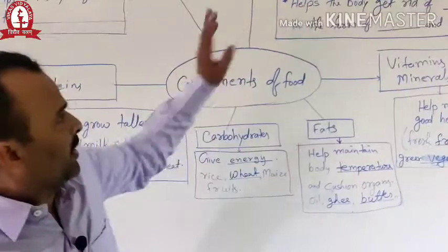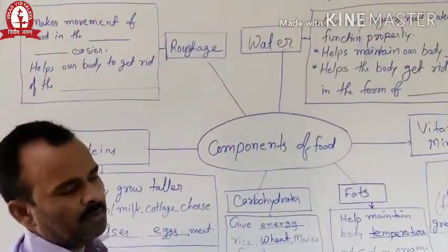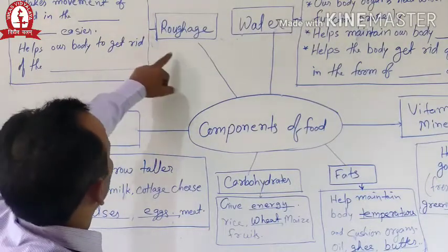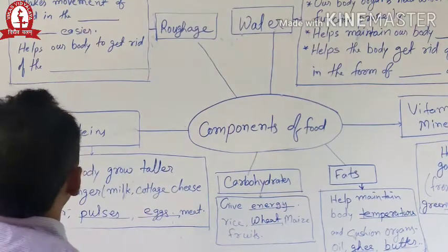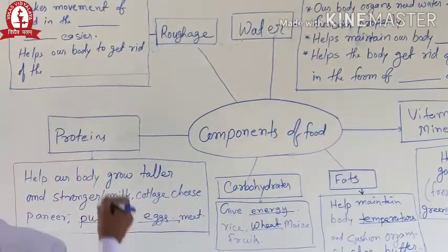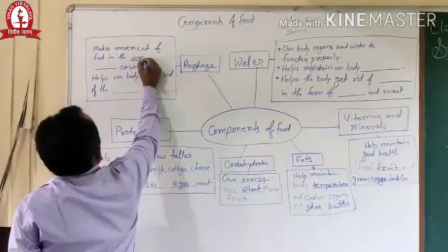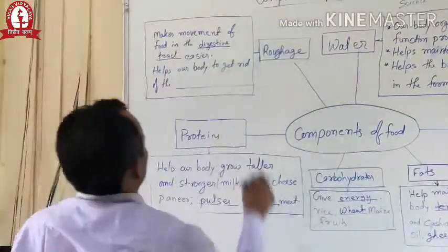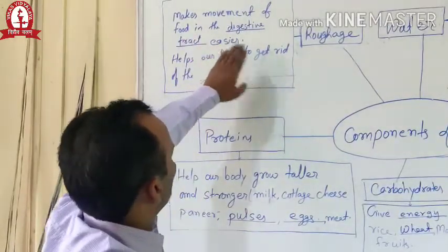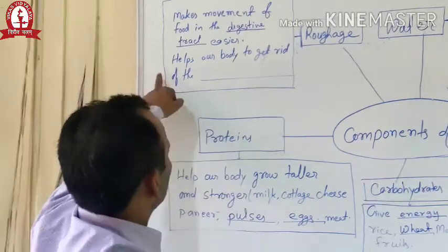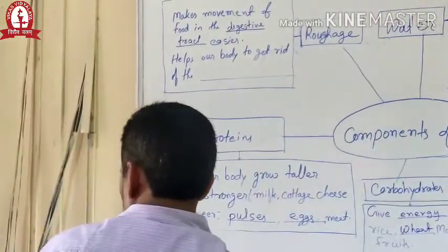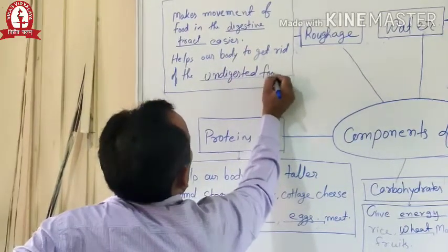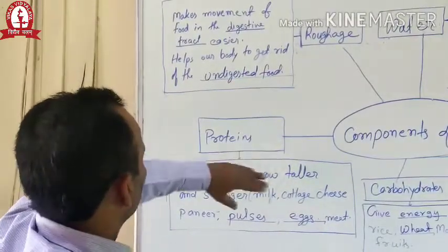After that, water and roughage. Water and roughage are also important for our body, though they are not nutrients. Roughage makes the movement of food in the digestive tract easier. It also helps our body to get rid of undigested food.